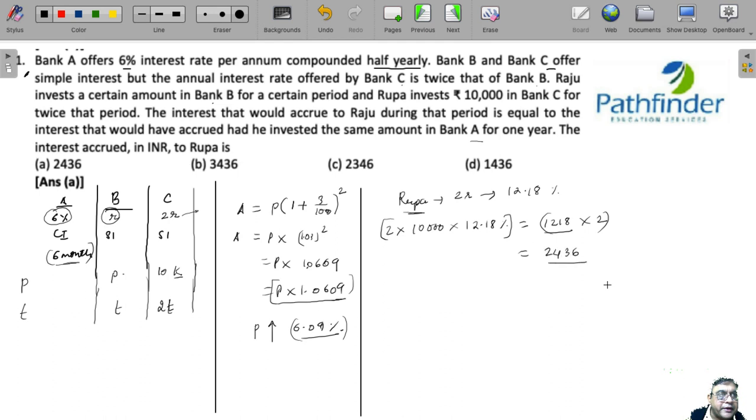Because she invested for twice the period, the result is 2436. What is the interest accrued in INR to Rupa? 2436, which must be your answer.